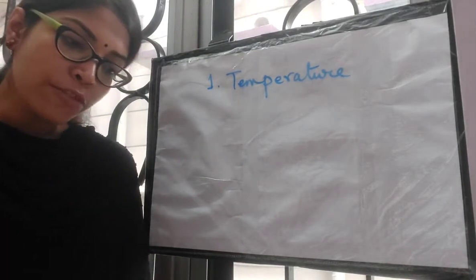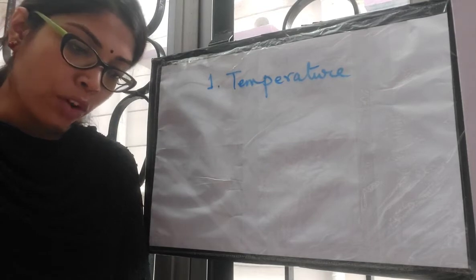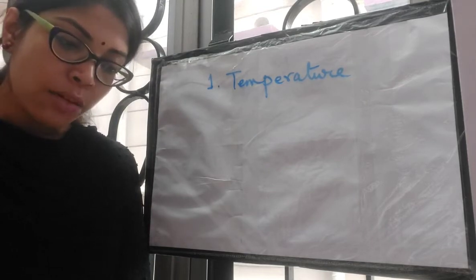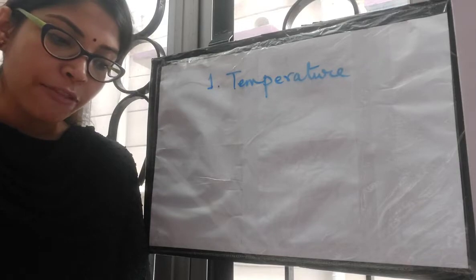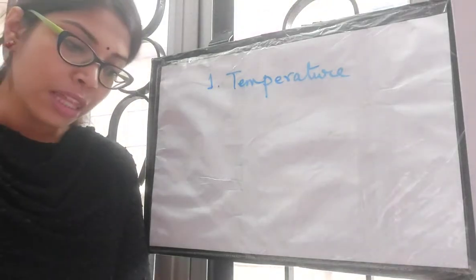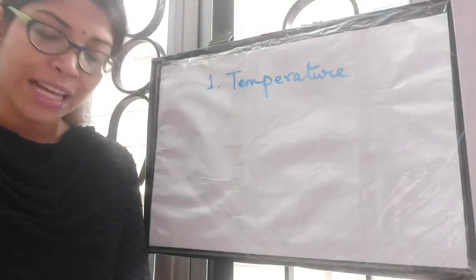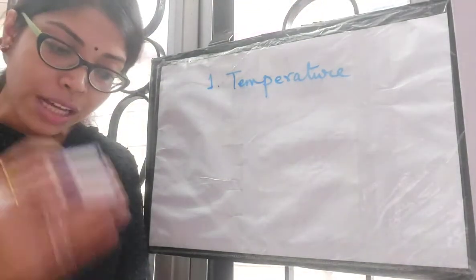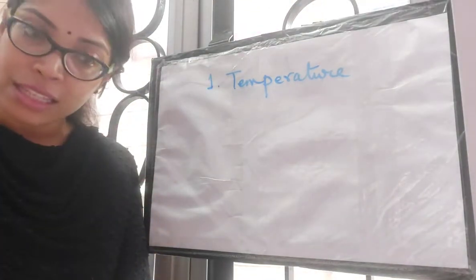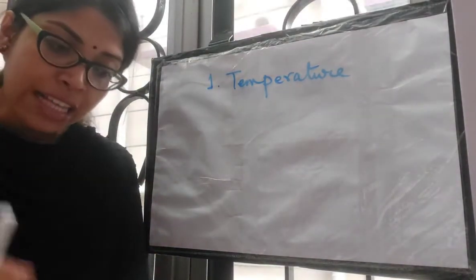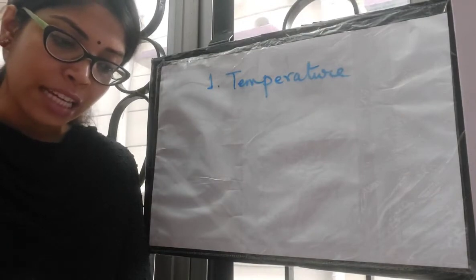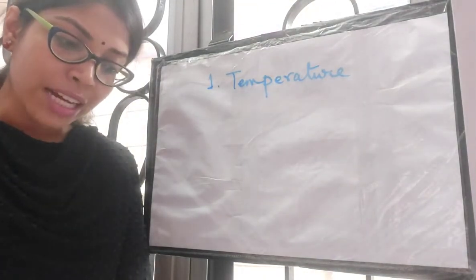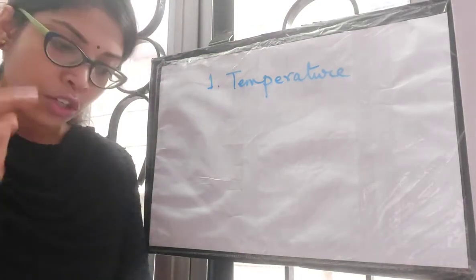Reading from your book: the effect of temperature upon the rate of transpiration can be analyzed in terms of its effects on vapor pressure within the leaf and outside atmosphere. Start from the second line: a rise in temperature causes a decrease in the relative humidity of the air and results in an increase in the rate of transpiration.